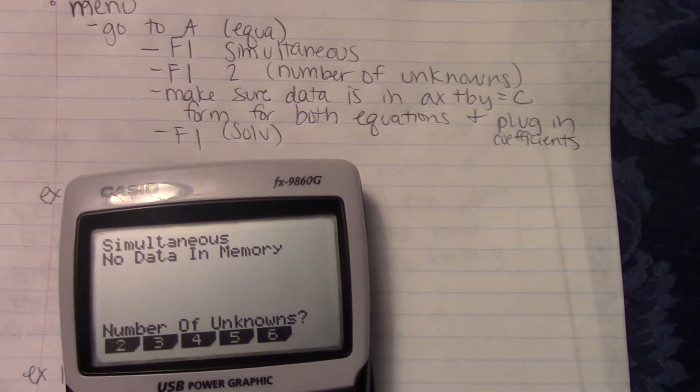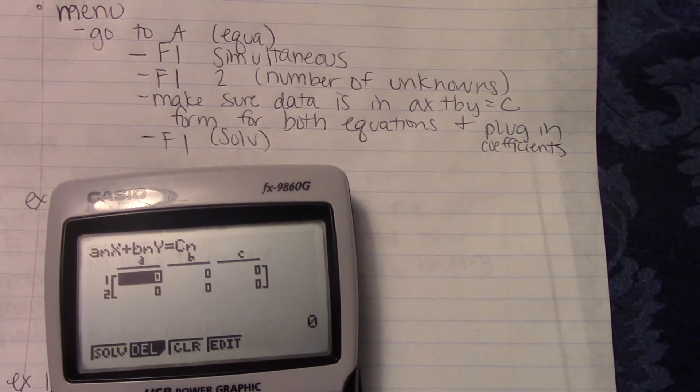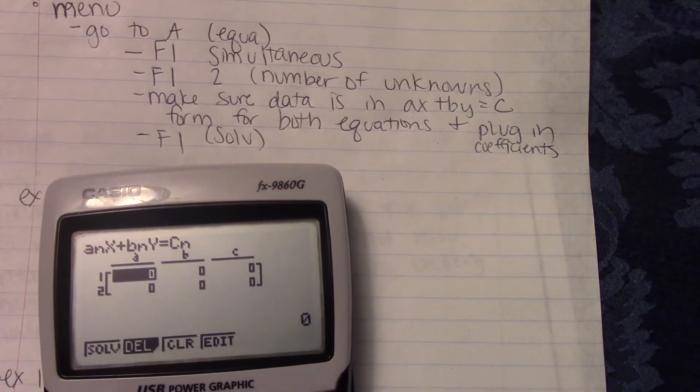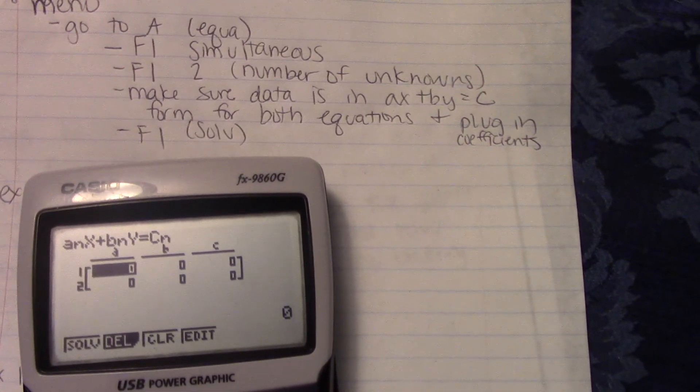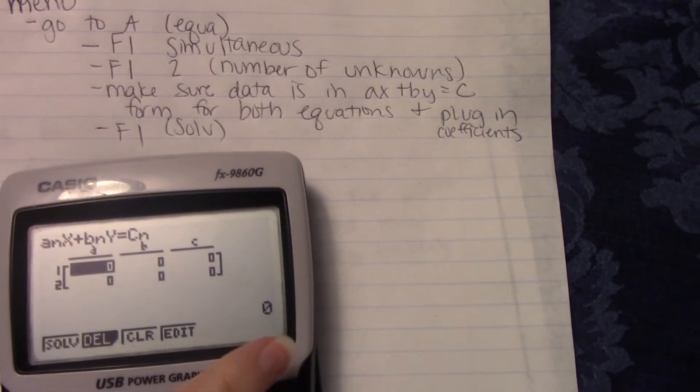Number of unknowns, in this case we are doing 2. So hit 2. Make sure the data that you have is in AX plus BY equals C form for both equations. And then you need to plug in the coefficients.